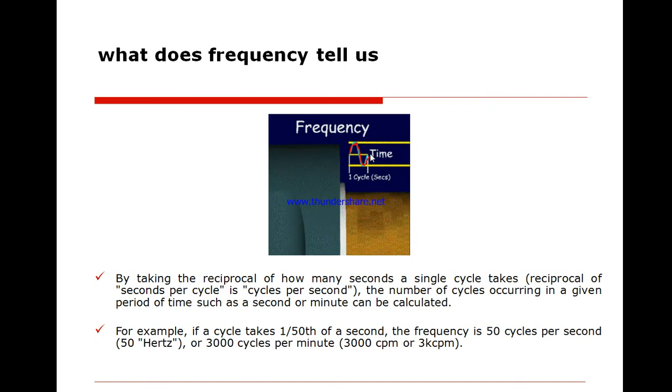If it is 50 cycles which is 50 Hertz, if you multiply it by 60, it will be 3,000 cycles per minute or 3,000 CPM or 3K CPM.